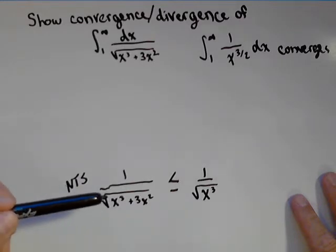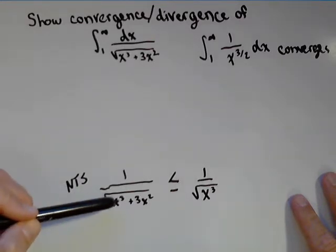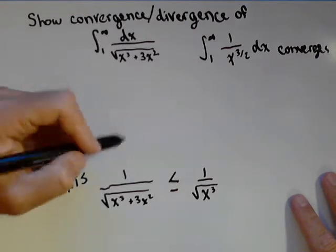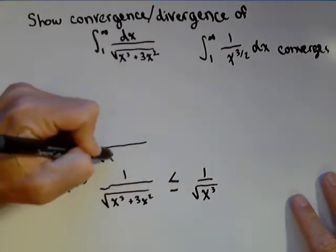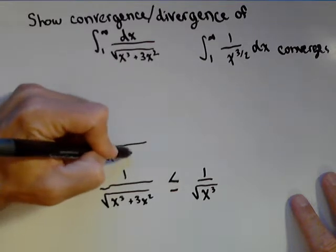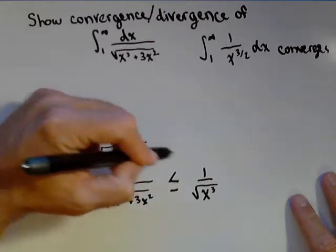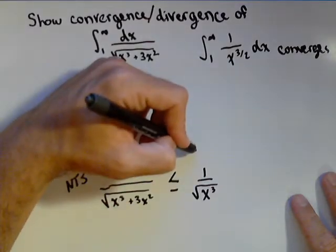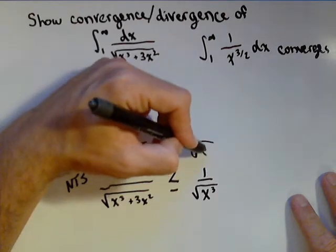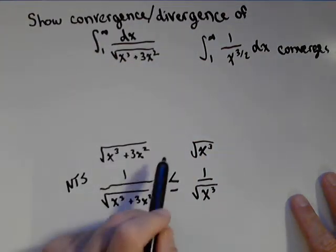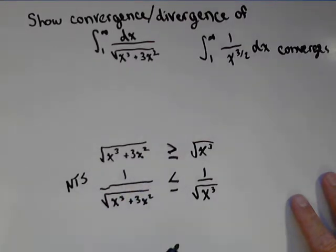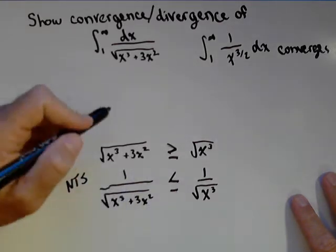So first thing, we wanna work backwards till we get back to an obvious step. So, the first thing that I notice, well, if I flip both of these, I get square root of x cubed plus three x squared. And now, if I flip this side, I get square root of x cubed. Remember, if you flip fractions, that flips the inequality. This seems to be true, but we can actually make it even more obvious. Let's square both sides.